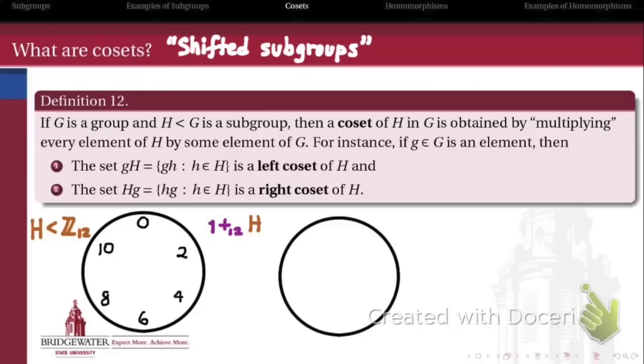and I add it to this subgroup on the left. In other words, I'm going to take, instead of 0, 2, 4, 6, and 8, I'm going to take 1 plus 0, 1 plus 2, 1 plus 4, and so on. And what I get is this collection of elements 1, 3, 5, 7, 9, and 11, which is now a coset.